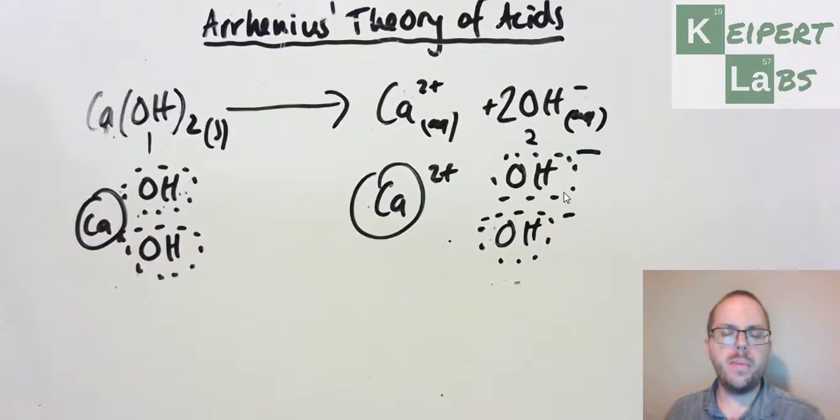So we've talked about Arrhenius' definitions, we've talked about the concept of dissociation, we've described the formation of this thing called hydronium, and we've also looked at a couple of quick examples of Arrhenius' acids and bases forming. I hope that this is helpful. Thanks very much for watching, and bye for now.